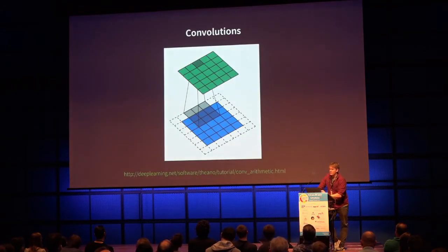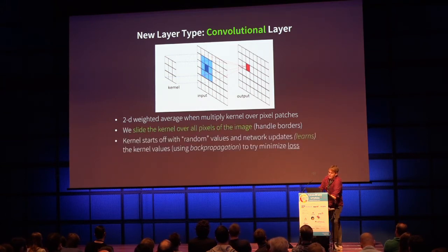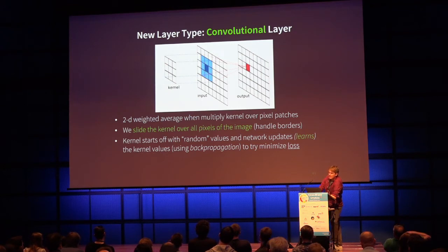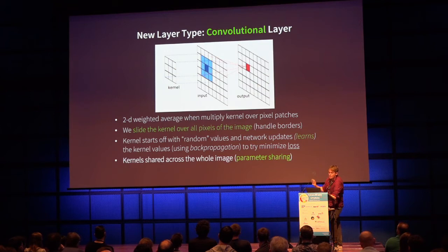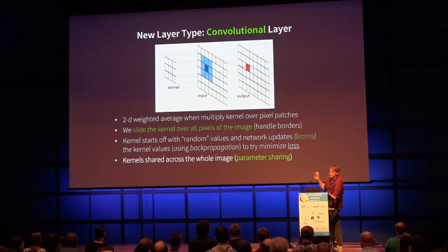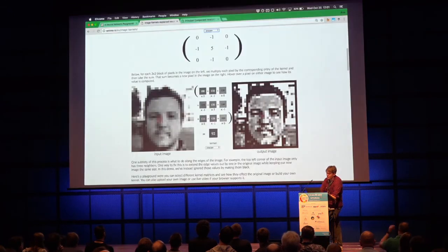We'll apply not just one kernel but many. For example, six different kernels produce six different activation maps — transformed versions of the input. Detecting outlines could be useful downstream for identifying what's in the image. So for a 224 by 224 input image, times 3 for the color channels, if we apply 64 convolutions, the next layer has a volume of shape 224 by 224 by 64. Layers deeper in the network have richer, more complex activation maps.